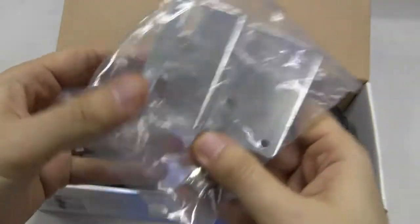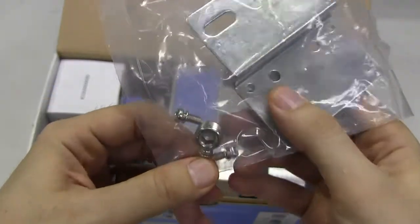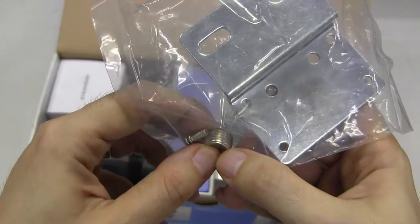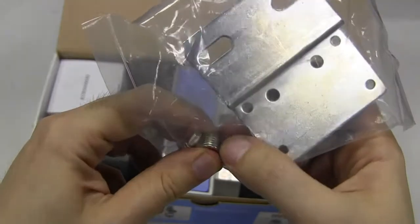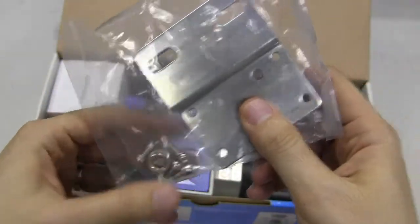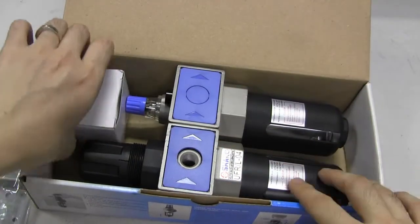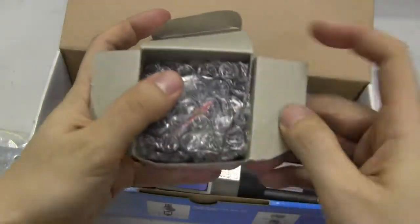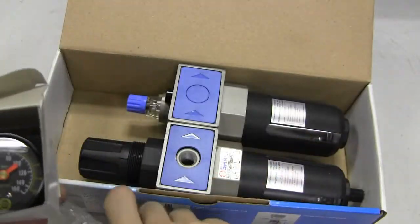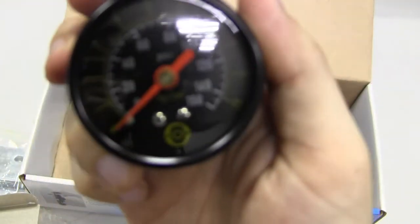Here's the bracket for the filter regulator, and we have the mounting bolts and also the plug for the other pressure gauge side to connect the pressure gauge on the other side. Here we have bubbles to protect the pressure gauge.